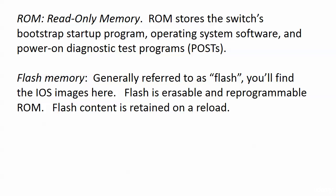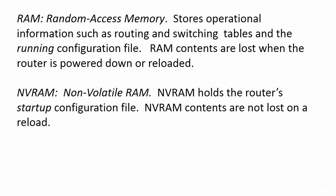Flash memory — almost always just called flash — is where the Cisco IOS images are stored. If you have enough flash, you may have more than one image stored there, but most devices just have the one they're going to use. Flash is erasable, reprogrammable ROM, and flash contents are retained on a reload, because you wouldn't want to load a new IOS image into flash every single time you reloaded a device.